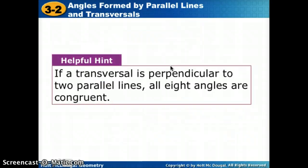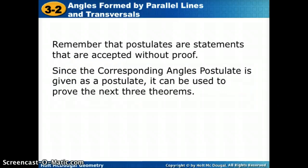Here's something else we can use: if a transversal is perpendicular to two parallel lines, all eight angles are going to be congruent to each other — all 90 degrees. A postulate is a statement we accept as true without proof, so we can always use the corresponding angles postulate as true.